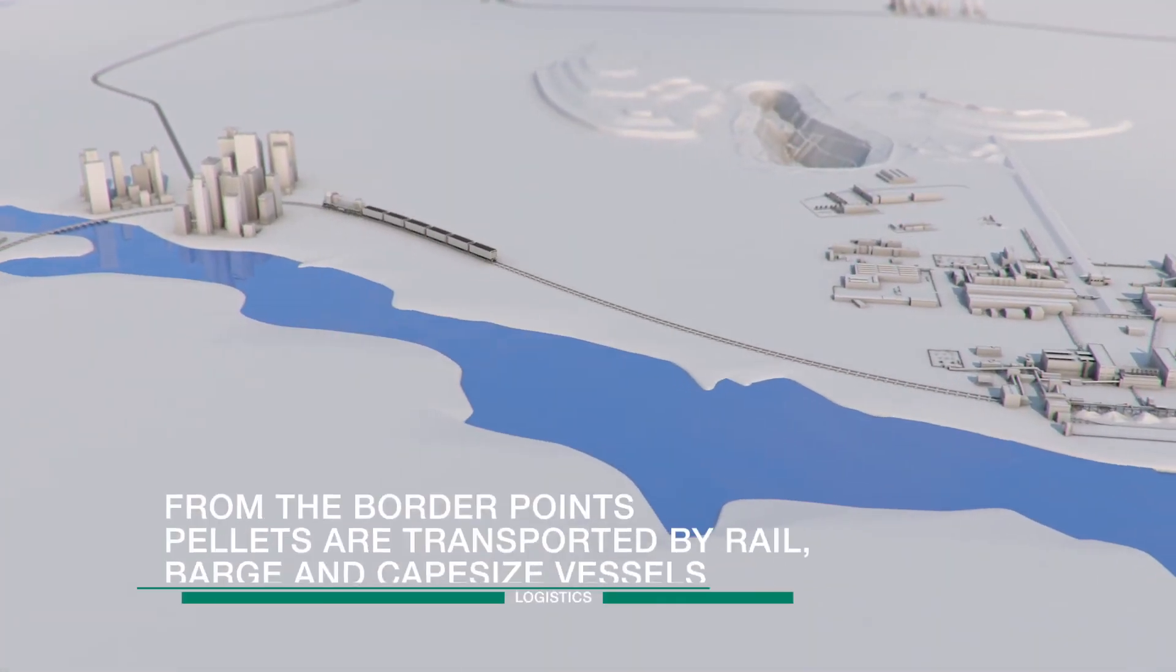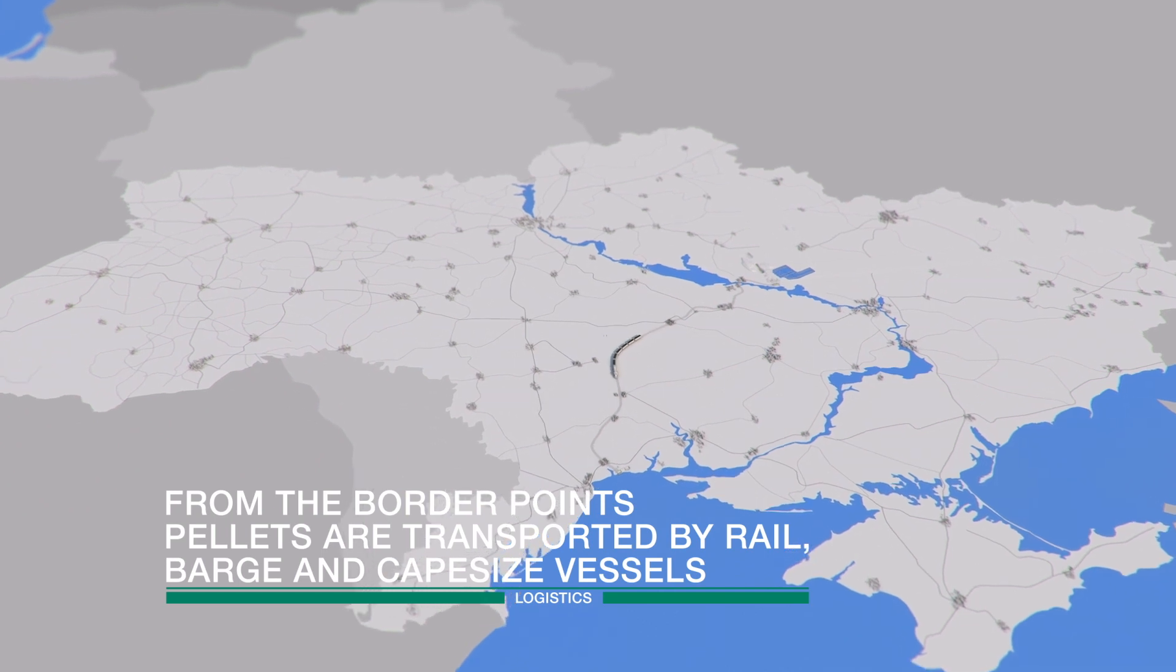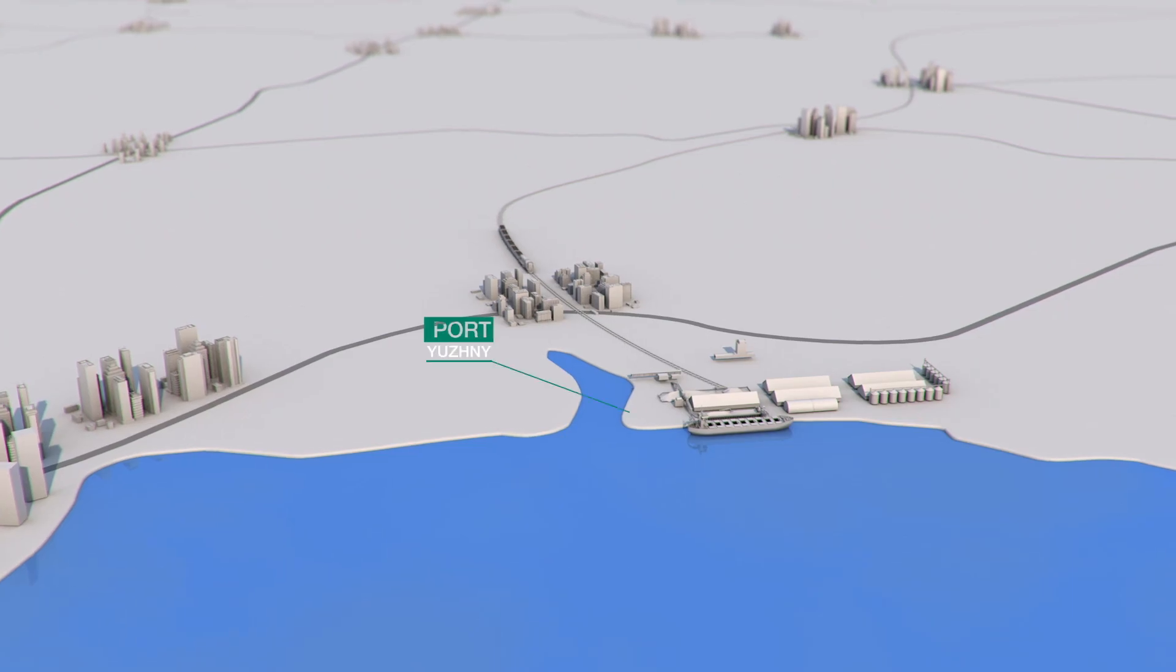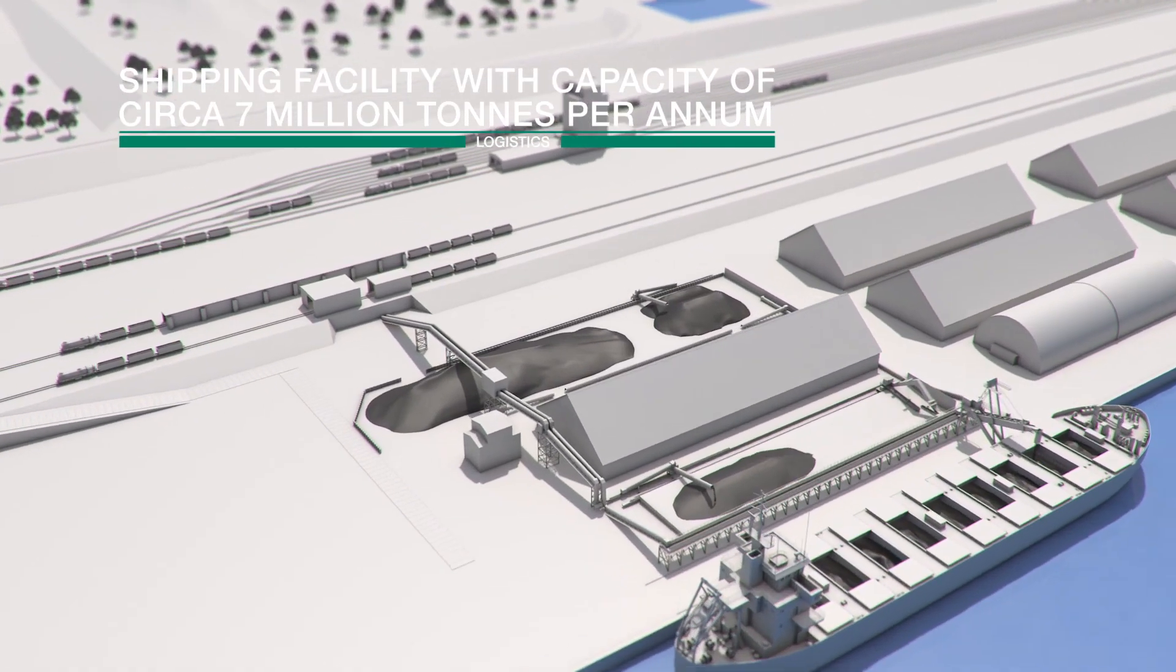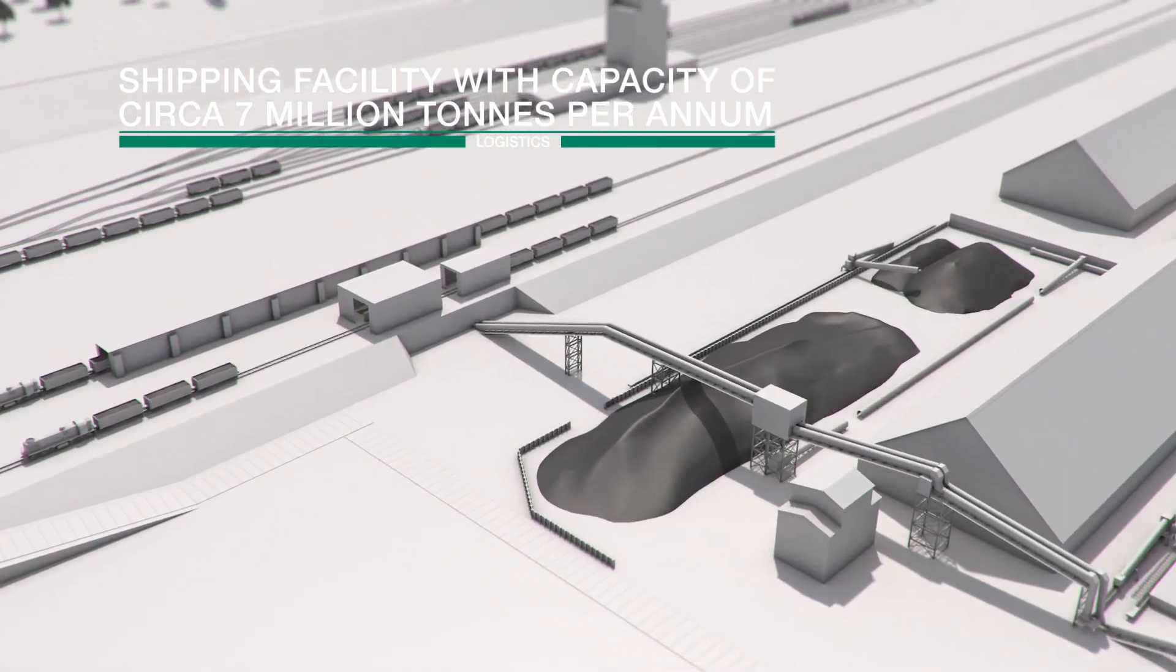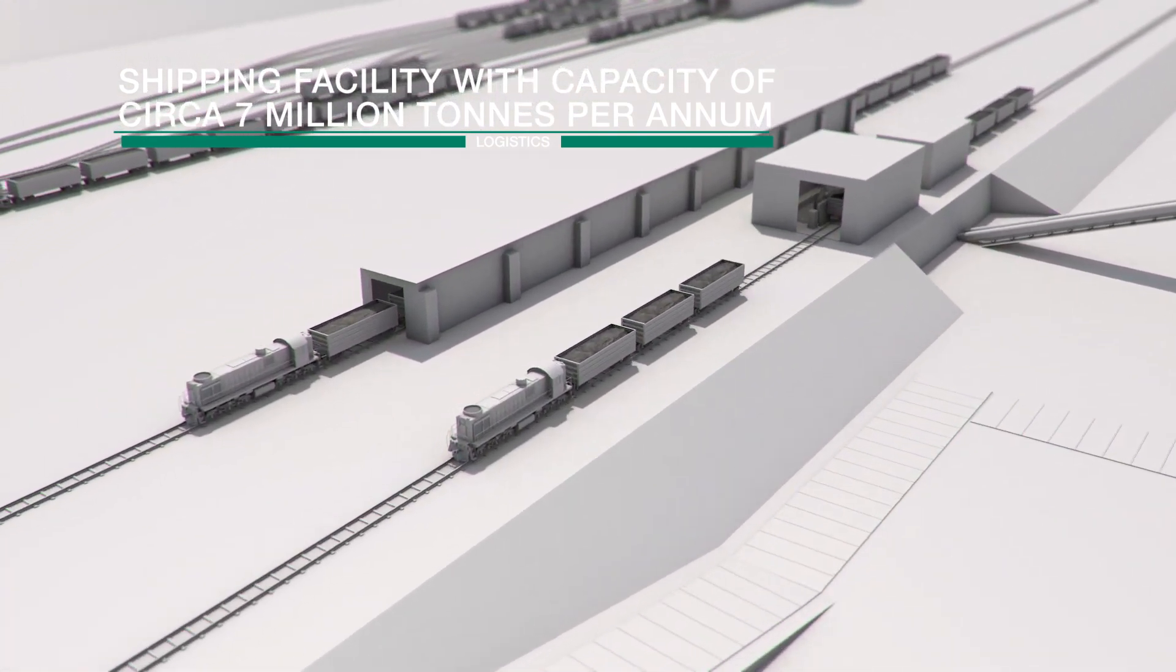Pellets are transported by Forexpo's railcars to the western border for shipments into Europe, or to the port of Yuzheny, where Forexpo co-owns a shipping facility with capacity of circa 7 million tons per hour.